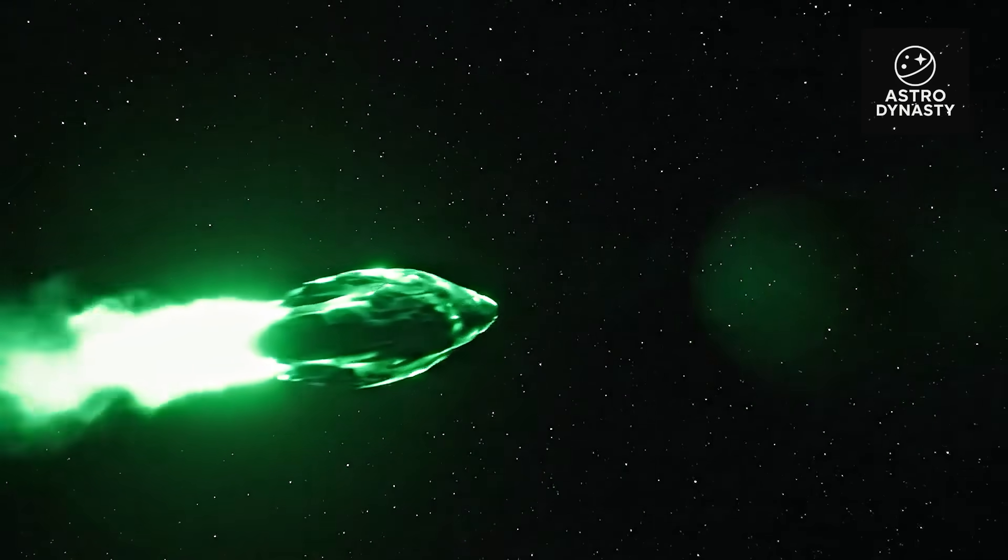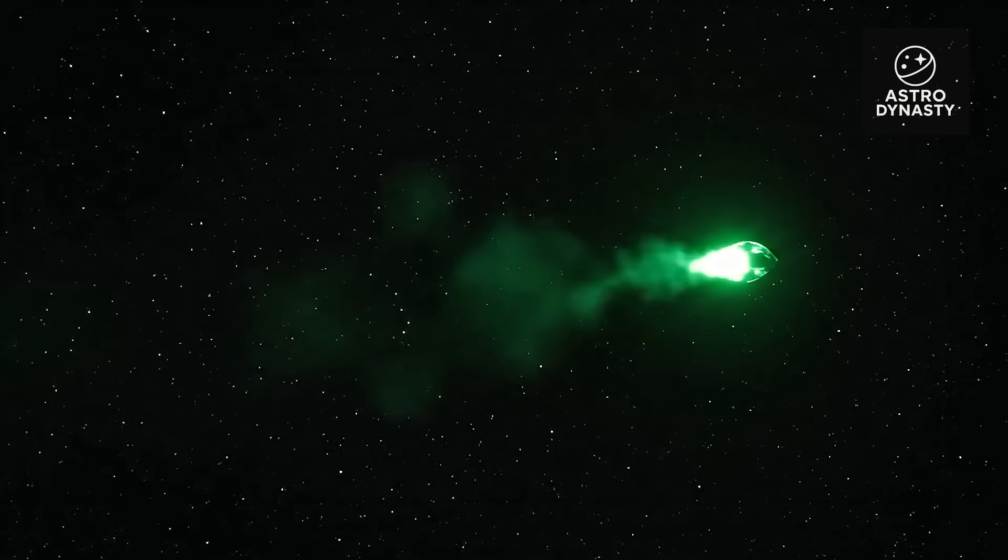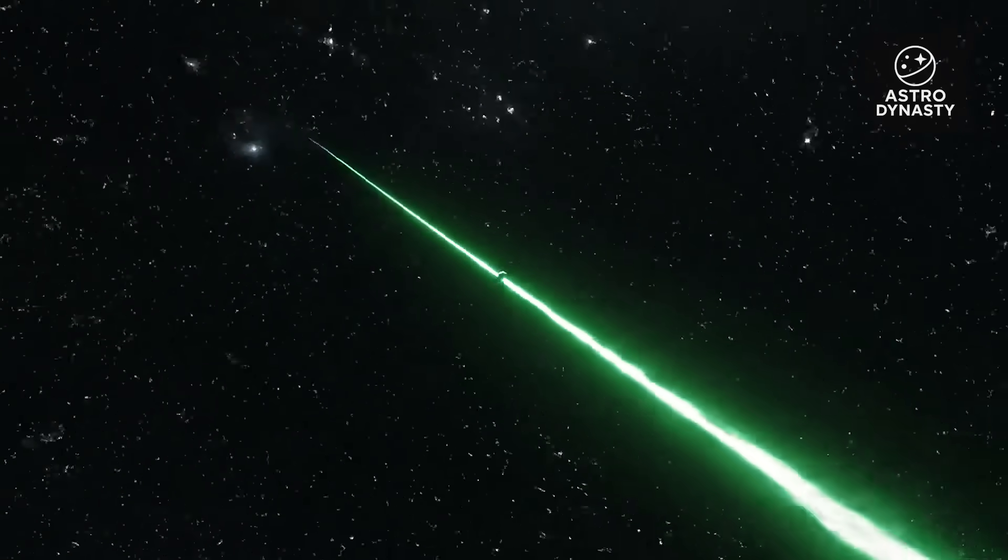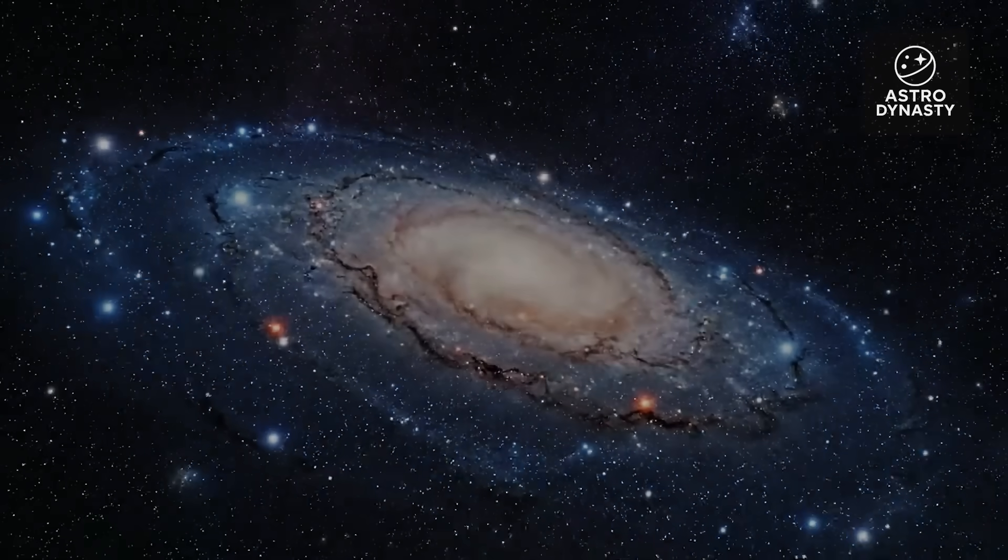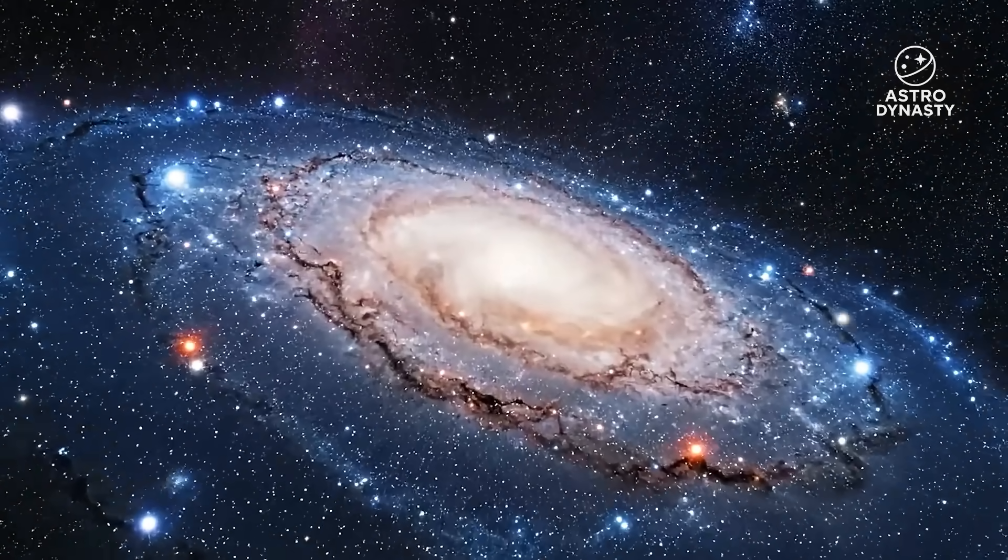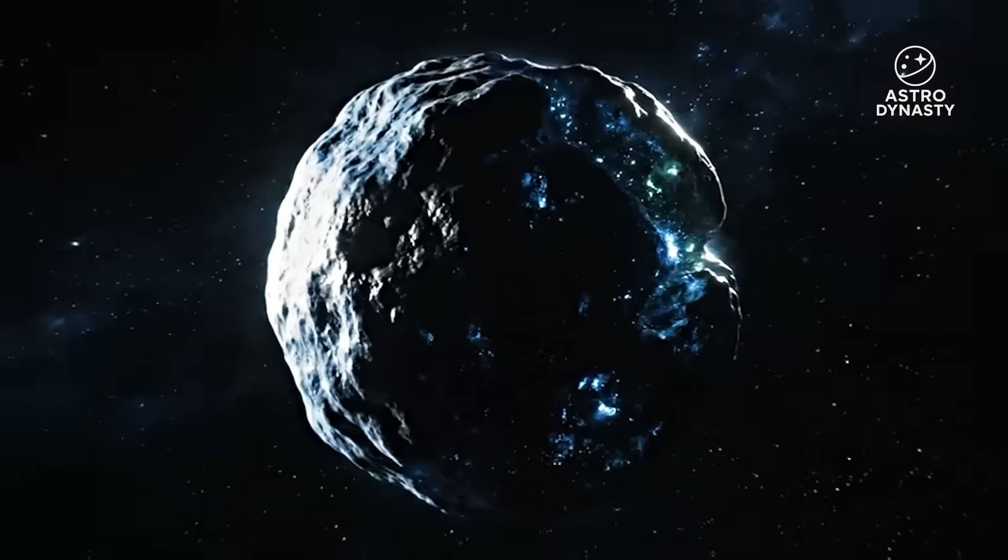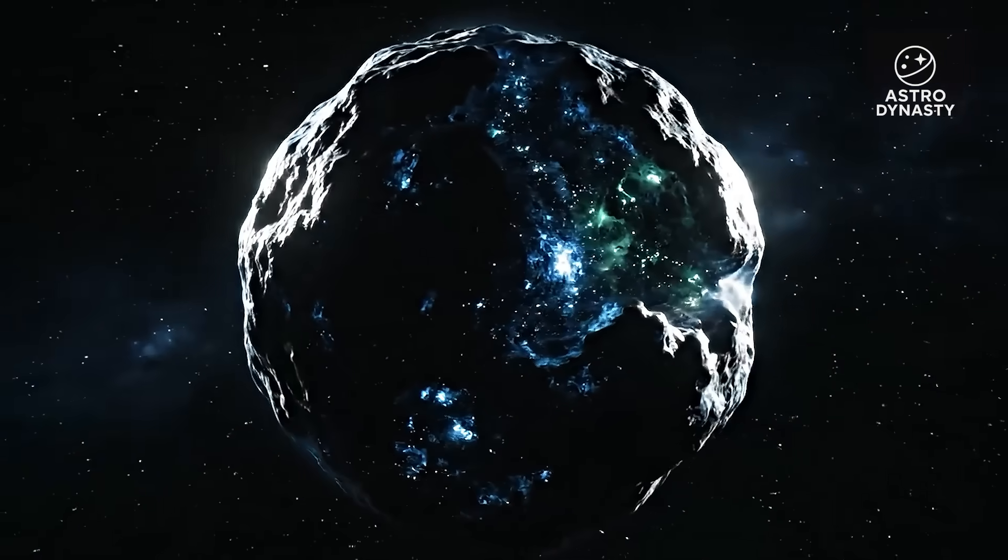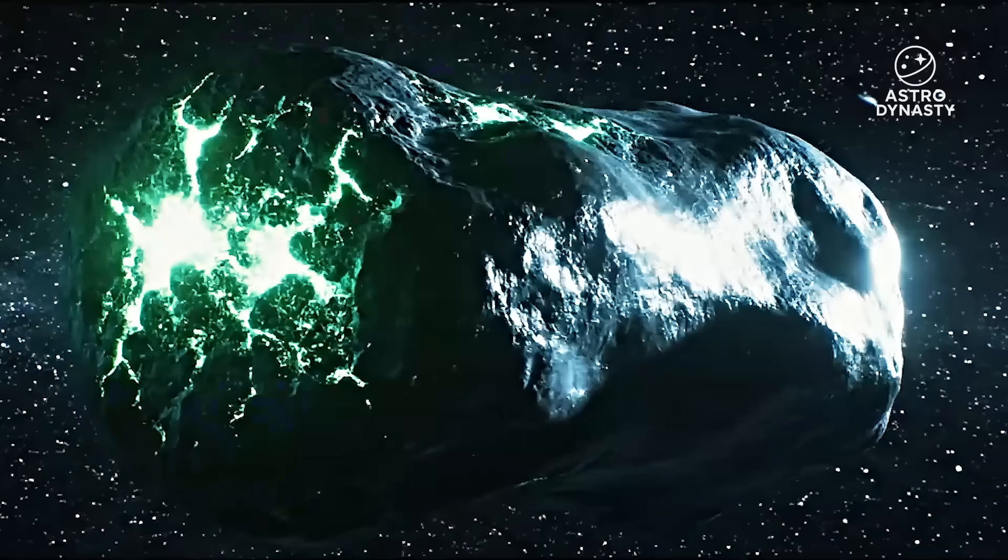So how could this happen? There are four ways to tell this story, each one harder to believe than the last. First, it's a hyperactive comet. As sunlight heats its surface, buried ices explode outward, acting like miniature thrusters. We've seen this before - jets twisting trajectories, nuclei splitting apart. But those effects are chaotic, messy, organic. 3i Atlas didn't drift like a leaf, it pivoted like an arrow. Outgassing explains turbulence, not precision.